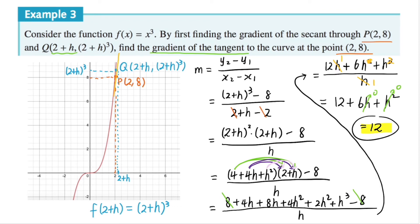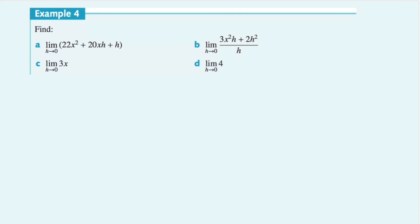Before we move on, there's one important thing to clarify. We can only say that h is approaching zero, or h goes to zero — but we never say h is equal to zero, because we're not setting h to a fixed value of zero. It's not substitution. We're talking about the value the gradient function is approaching as h approaches zero. So although we substitute zero into the equation as a method, we're not saying h equals zero — h is only approaching zero. This is a very important distinction to keep in mind.